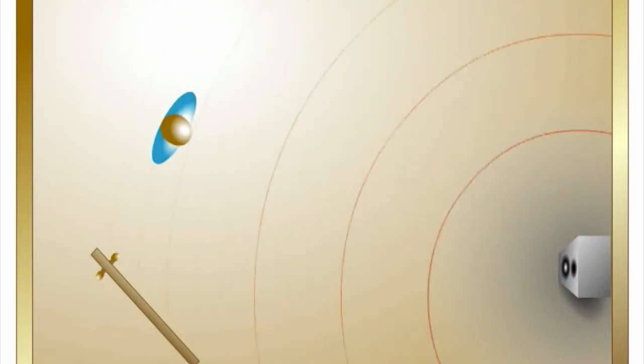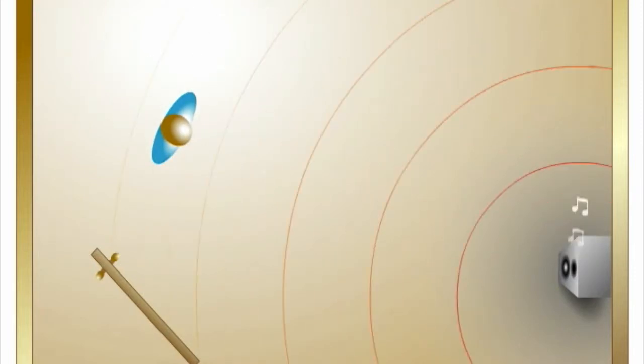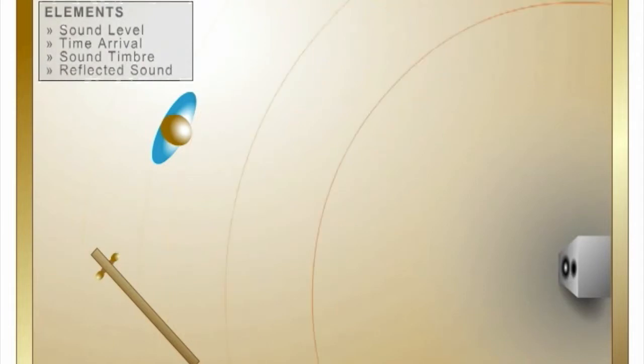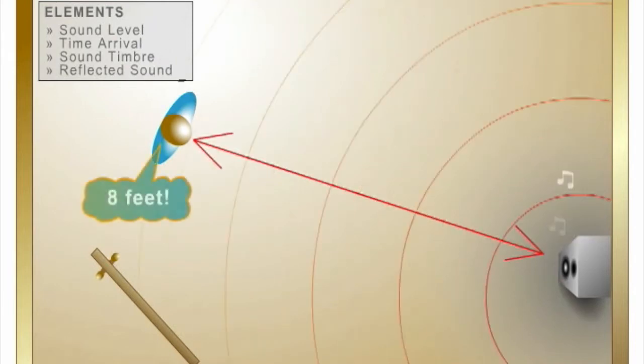The ears and brain work together to estimate the distance of a sound source. The overall level of a sound, the time arrival, the timbre of the sound, and the ratio of direct to reflected sound within a space are the elements required for the brain to perceive the distance of the sound source.